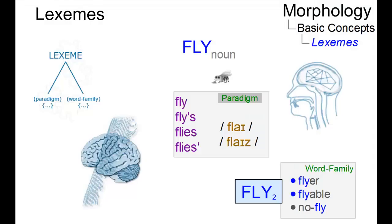A lexeme is defined as the fundamental unit of the lexicon of a language, that is, as an abstract vocabulary item which may be realized in different sets of grammatical variants.